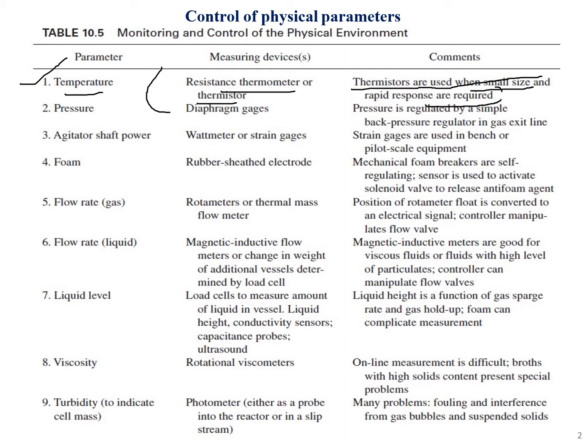The second parameter is pressure. Pressure is measured with the help of diaphragm gauges, and it is regulated by a simple back pressure regulator in a gas exit line.